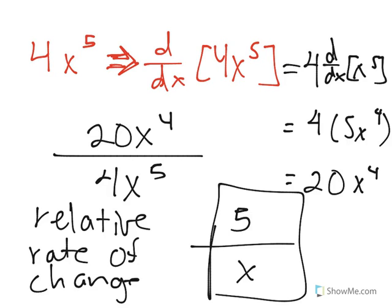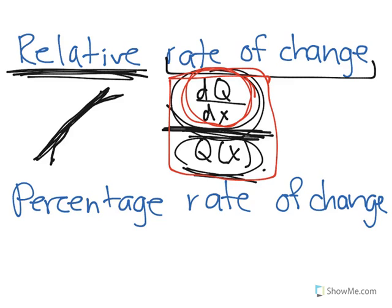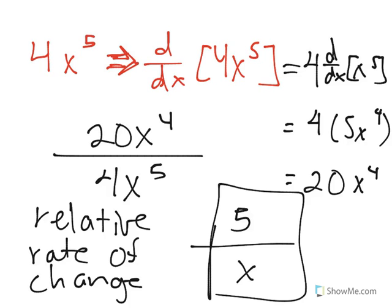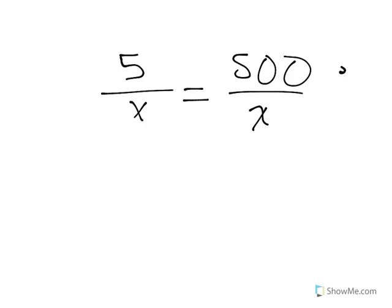Very well. Now let's look at the other term we had: the percentage rate of change. The percentage rate of change is just the relative rate of change represented as a percentage. So in this case, we found the relative rate of change to be 5/x, so the percentage rate of change is 500/x percent.